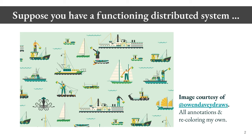To begin, let's suppose you have a functioning distributed system. When I say distributed system, what I mean is a system with many different components, and those components do not share their computation — they compute separately. They can communicate over some channels of communication, and in that way they can effectively accomplish shared computation, but it's really a different thing because they're separate siloed components that simply communicate with one another.